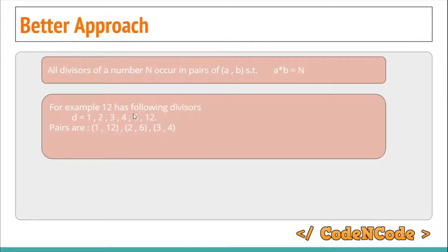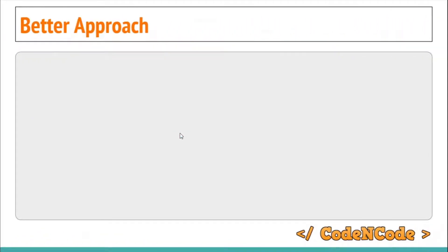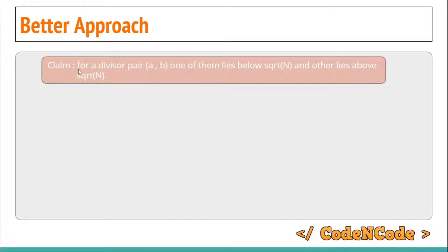The problem is 3 is the limit for 12 — how do we get the limit for any number n? We need to find up to what limit we have to run the loop, not completely till n. The claim is: for a divisor pair (a, b), one of them lies below the square root of n and the other lies above the square root of n.